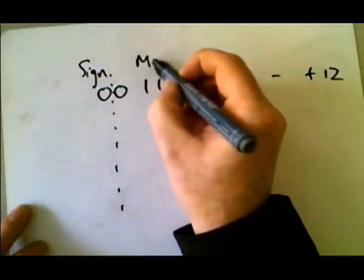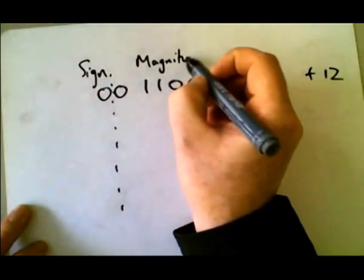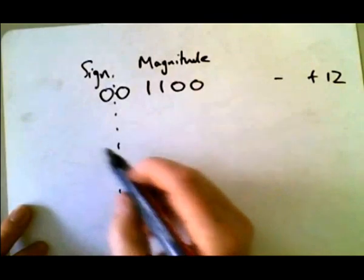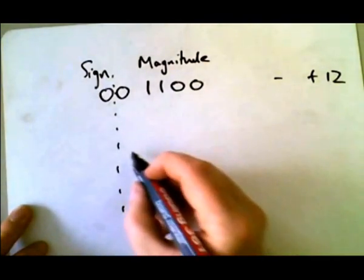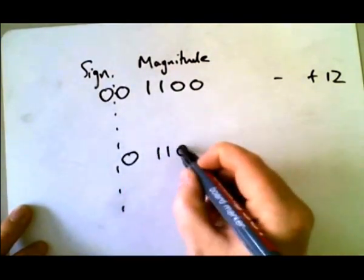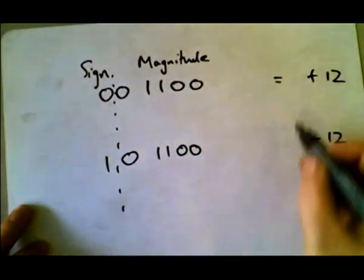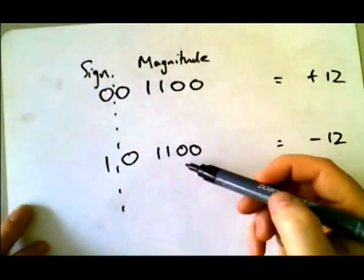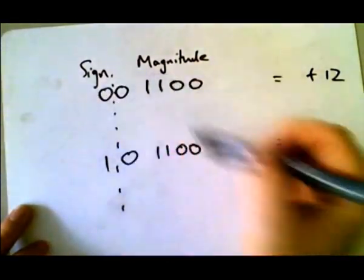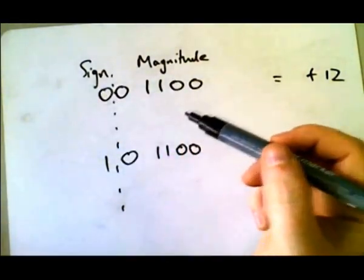And everything else represents the magnitude. So if we want to make this minus 12, all we do is say the magnitude is still 12, but the sign is the other way around. It's minus 12. So plus 12, minus 12. All you do is look at the sign, look at the magnitude, and it works very much like denary numbers.